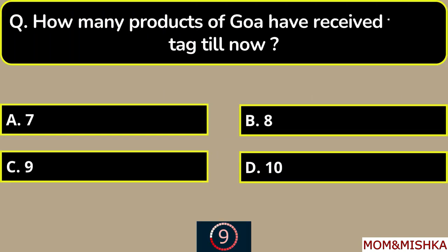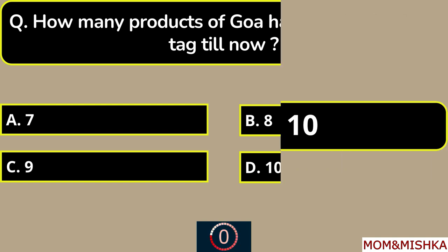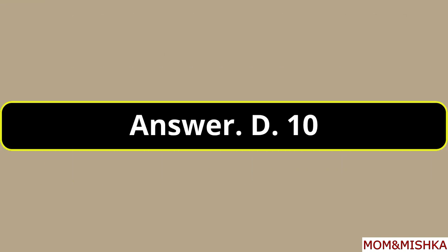How many products of Goa have received the GI tag till now? Total ten products, option D.